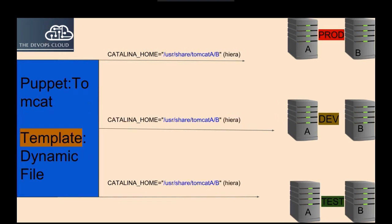To resolve this issue we can use Puppet templates. With Puppet templates you can assign dynamic configuration to Puppet clients with the help of Hiera. You don't have to write code for every environment or every server. You only need to create a template and inside that template define what values you want to manage through Hiera.